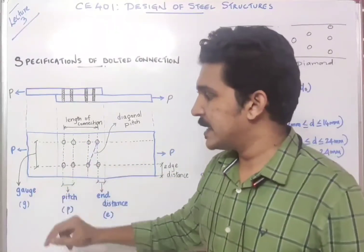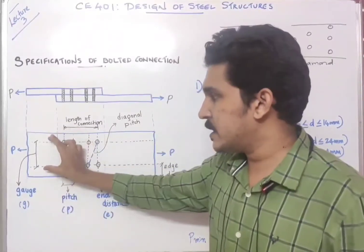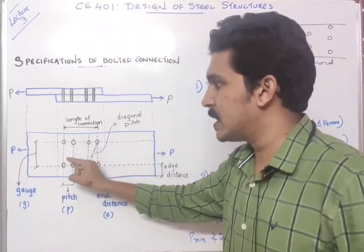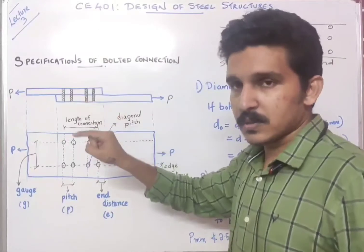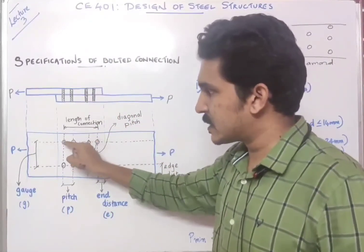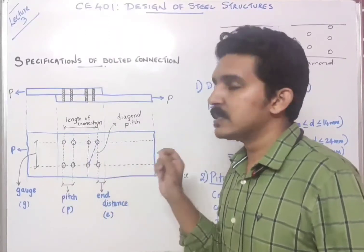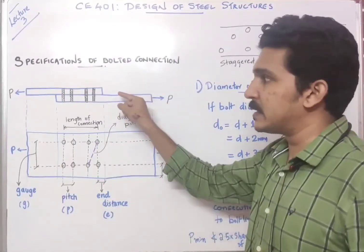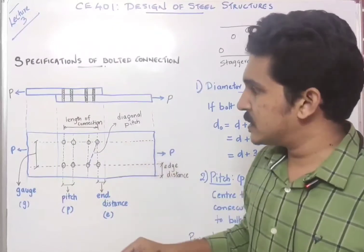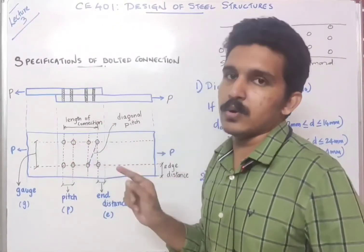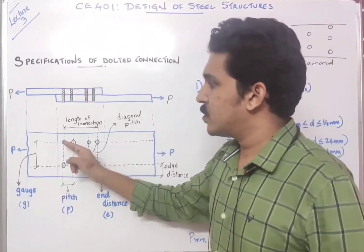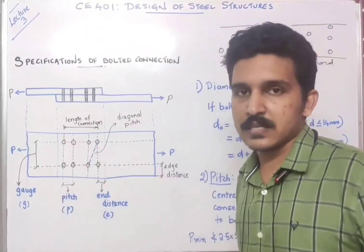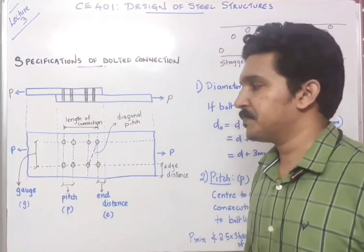The next term is gauge. Gauge is in the perpendicular direction to pitch — that is, it is the center-to-center distance between bolt holes measured perpendicular to the direction of the load, denoted by G. Note that for design purposes we always use the center of the bolt hole, not the bolt itself, because the bolt fits inside the bolt hole. So the gauge is the center-to-center distance between consecutive bolt holes in the direction perpendicular to the load.